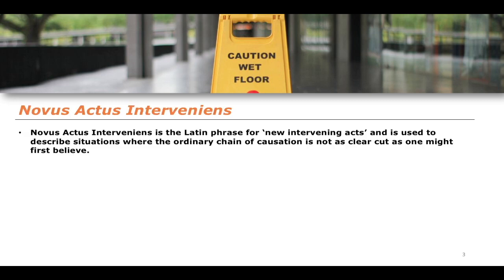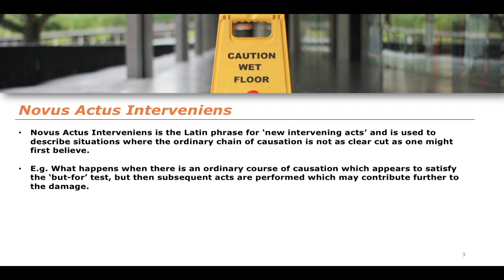Novus actus interveniens describes situations where negligence on the part of the defendant causes harm to the claimant, but where something else happens between the defendant's negligent action and the claimant suffering damage — something that may contribute to further damage. What happens to the chain of causation at that point?